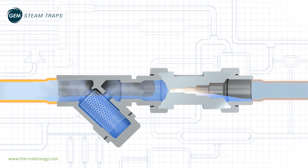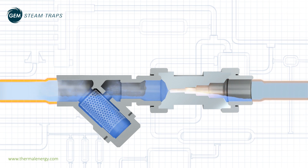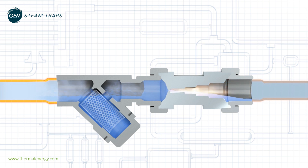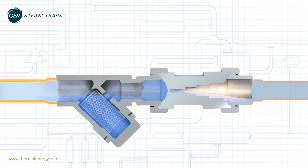The flash steam created is up to 1,700 times greater in volume than the condensate. The gem trap's multistaged throat is designed to restrict the expansion of the flash steam and create a variable local back pressure, which increases and decreases with flow rate. This allows the trap to maintain a local and continuous plug of condensate at the orifice.